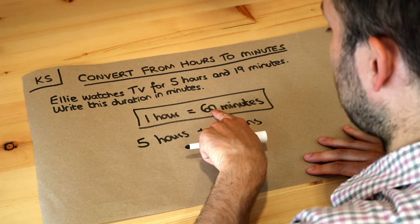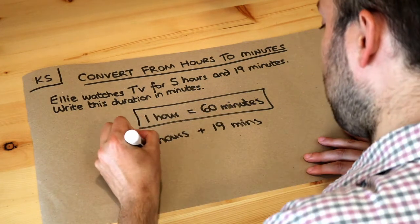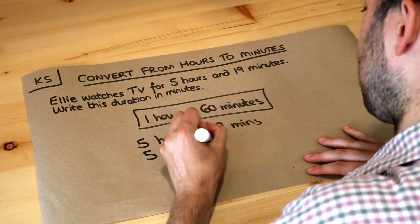Then if one hour is worth 60 minutes, then five hours would be five lots of 60. So we just do five times 60 and then we've got the extra 19 minutes. I'm going to add that on.